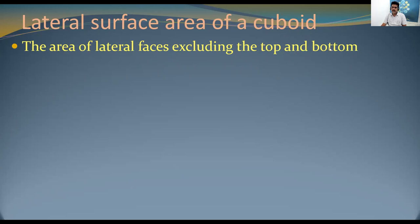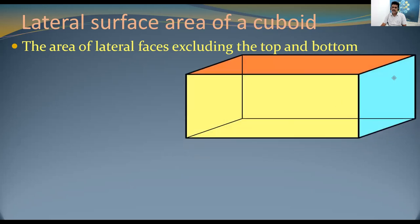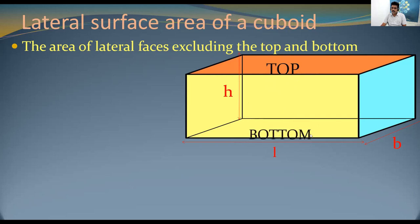Let me show the diagram. Here is a cuboid with its top face and bottom face identified. The three dimensions are length (l), breadth (b), and height (h). To find the lateral surface area, we exclude the top area and the bottom area, since they are identical faces.